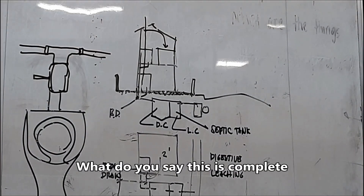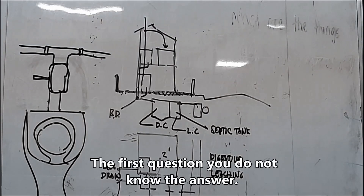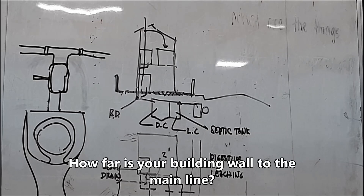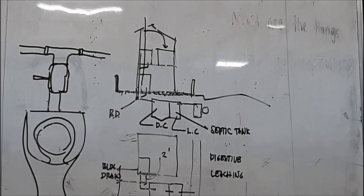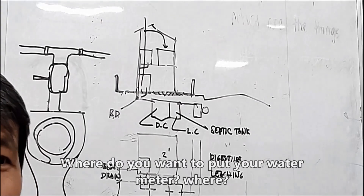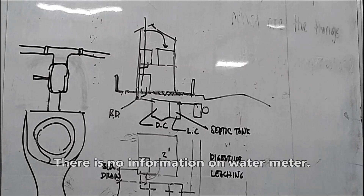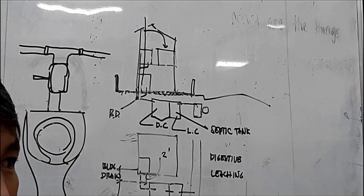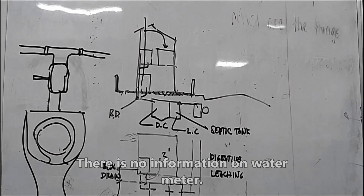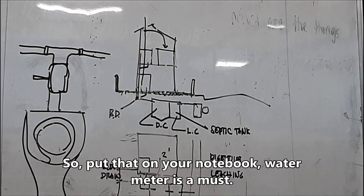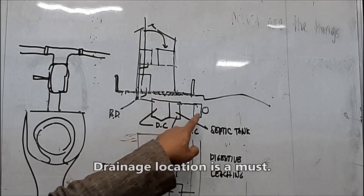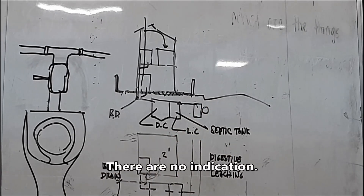Is this plan complete? The first question — you did not know the answer. How far is your building wall to the mainline? There is no water meter shown. Where do you want to put your water meter? There is no information on the water meter. Is this vanilla water that is free of charge? No — there is no information on the water meter. Put that in your notes: water meter is a must. Mainline location is a must. Drainage location is a must. There are no indications.